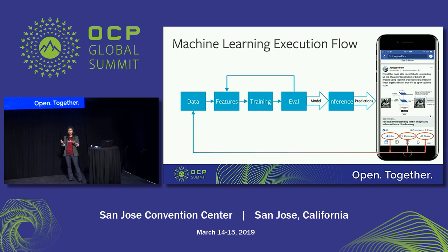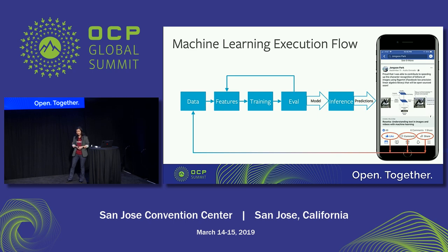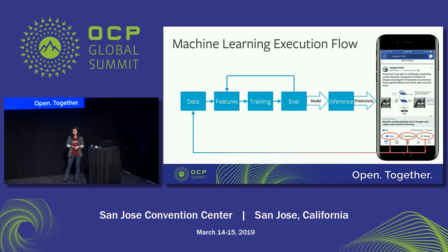Out of the training, we get a model. We put the model into our evaluation system and check the performance. The performance measurement will differ with different kinds of services. For example, if we're doing object detection, then the performance metric will be accuracy. If we're doing translation, we care about the quality, so the performance may be a BLEU score. If the performance is good, we ship it to inference to do the prediction. If not, we redo the training again. Normally, training is offline and inference is online.